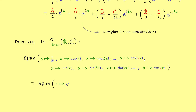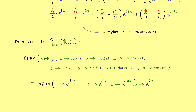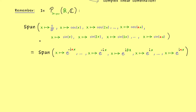For the exponential span, we start with e to the power i·(-n)x, then reduce the factor n to n minus one and so on until we reach one — that's n functions. Then comes the constant function, which we can also write as an exponential function with zero times x, since that always equals 1. And then we continue with the plus sign in the exponent, increasing until we have e to the power i·nx. You will believe that we can do the same calculation as before for this general case to see that both spans are exactly the same.